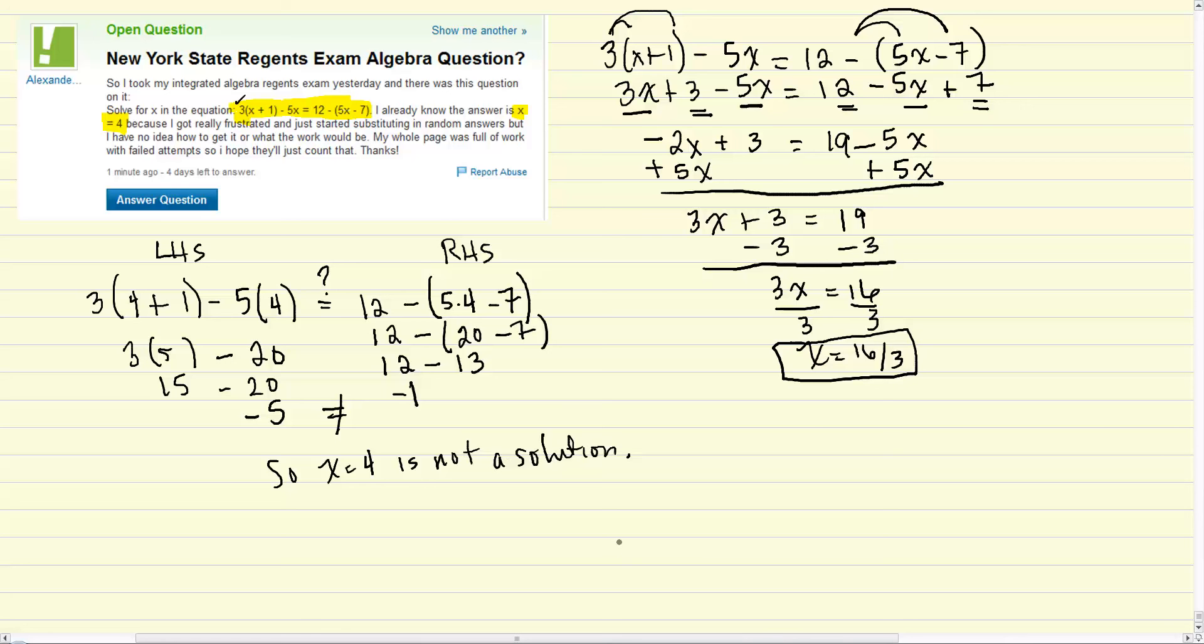What we can do then is actually check the 16 over 3 to find out if that is a solution. Let's see. 3 times 16 over 3 plus 1 minus 5 times 16 over 3. The question is, is that equal to 12 minus 5 times 16 over 3? Boy, this one's going to be fun. Minus 7.